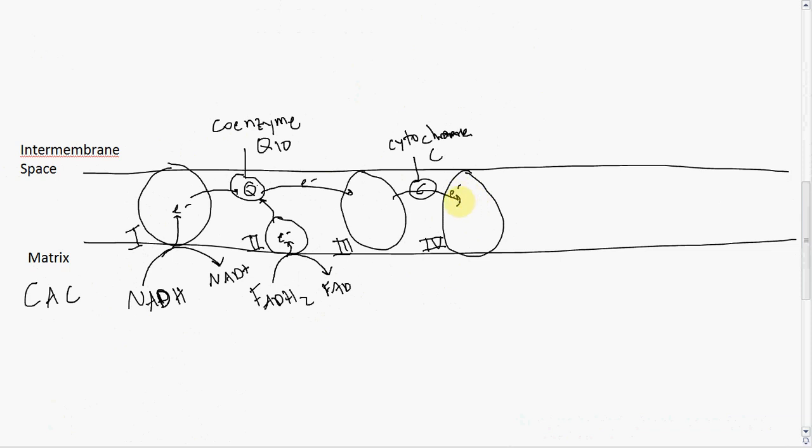Complex 4—the electrons eventually have to go somewhere. The electrons from complex 4 are given to oxygen to make water. This is known as aerobic respiration because it requires oxygen. Oxygen serves as a sink for all these electrons being transferred around, so they don't end up anywhere we don't want them.